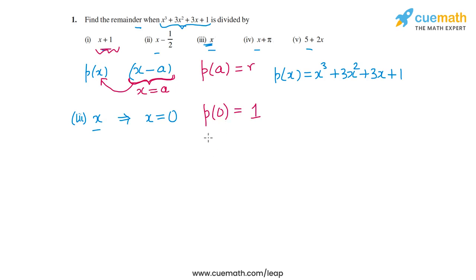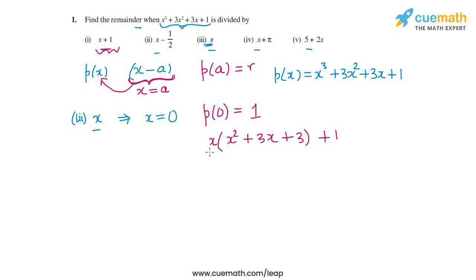In fact, looking at the polynomial x³ + 3x² + 3x + 1, if we factor out x from the first three terms we get x(x² + 3x + 3) + 1. Just by inspection, we can see that when p(x) is divided by x, what remains is 1.